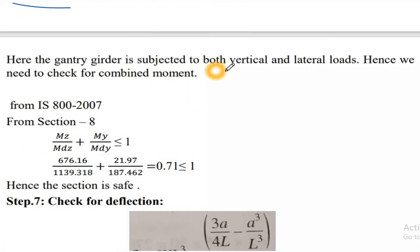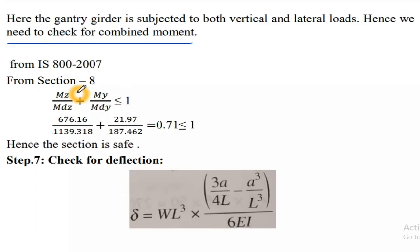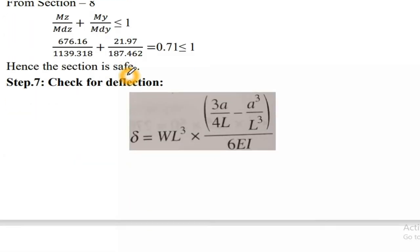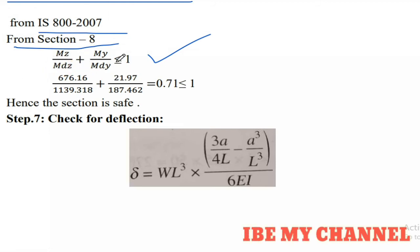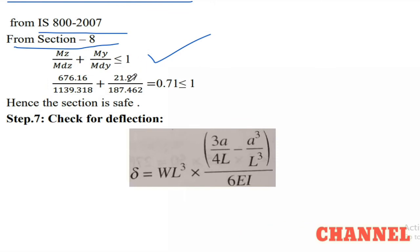Since the gantry girder is subjected to both vertical and lateral loads, we check the combined moment interaction formula from IS 800:2007, Section 8: Mz/Mdz + My/Mdy ≤ 1. Substituting values, the result is 0.71 ≤ 1. Hence the section is safe.